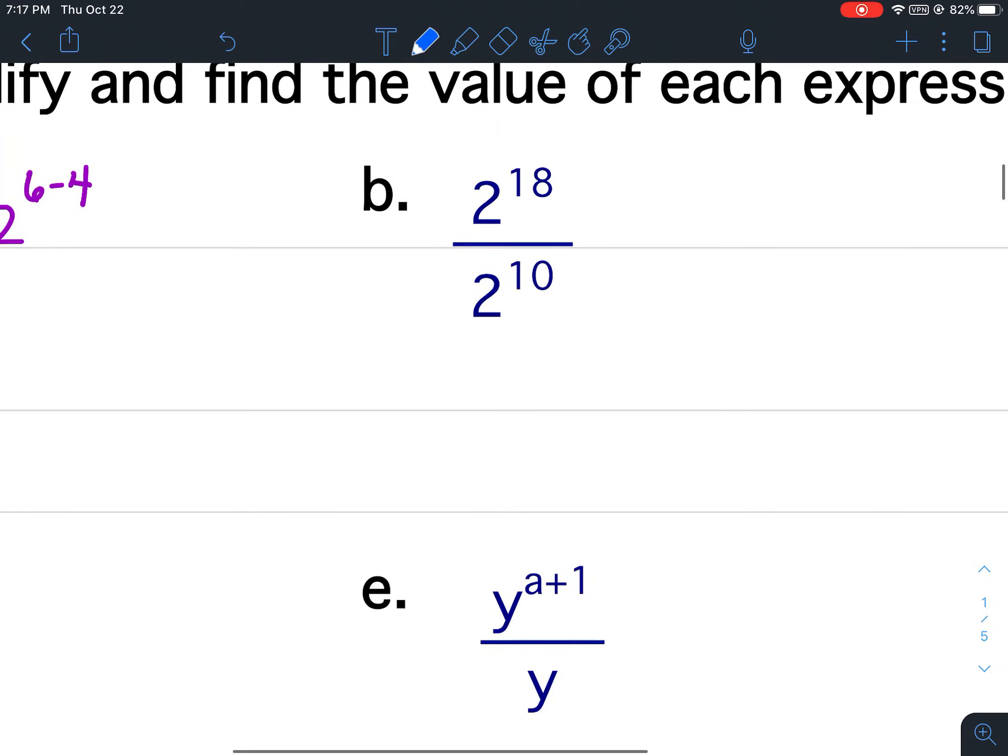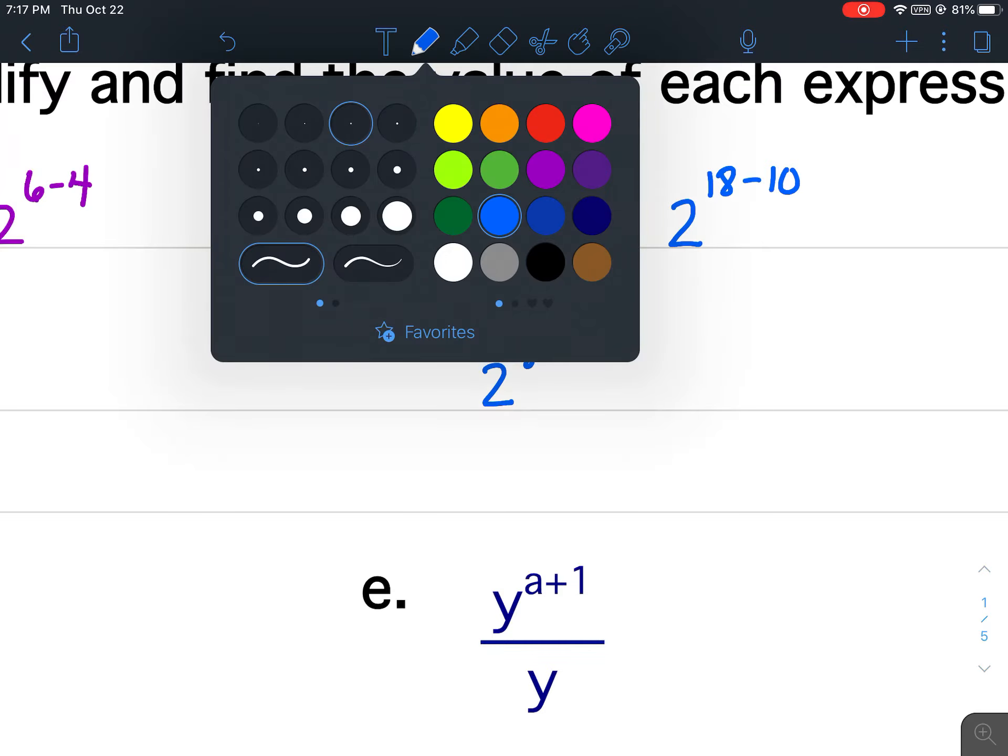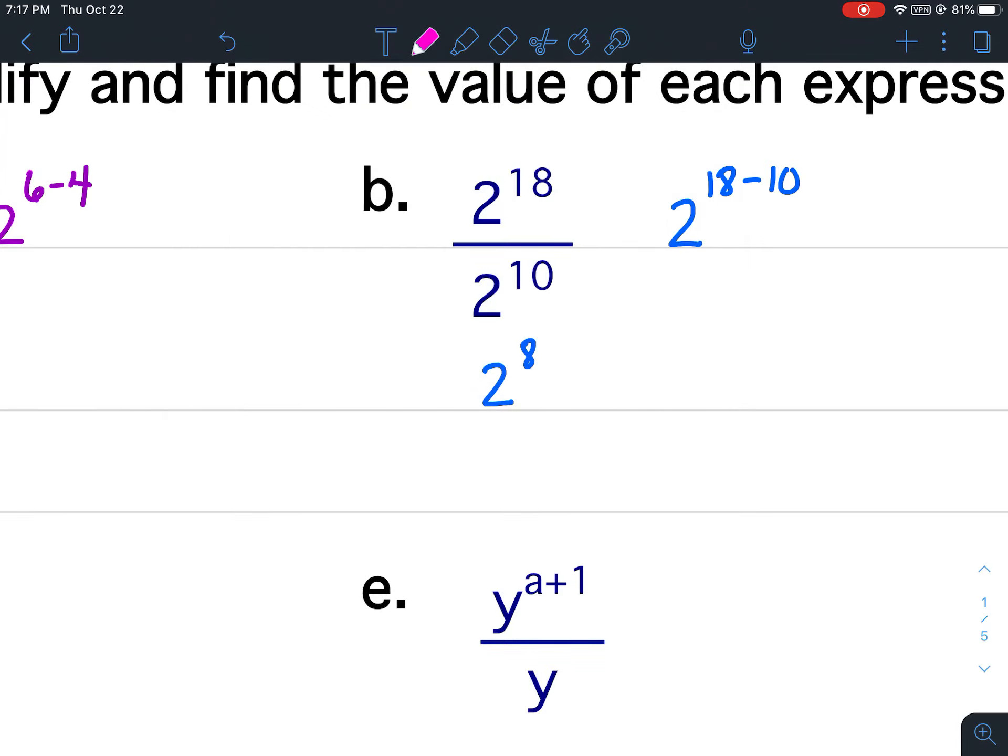Okay, let's look at B. So I've got 2 to the 18th over 2 to the 10th. So off to the side this would be 2 to the 18 minus 10. 18 minus 10 is 8. If you would put 2 to the 8th in your calculator you would get 256. So again I took 18 minus 10 to get 8 and then 2 to the 8th is 256.